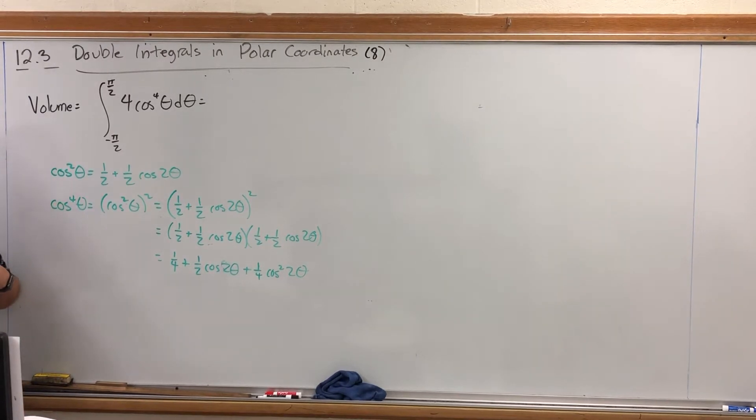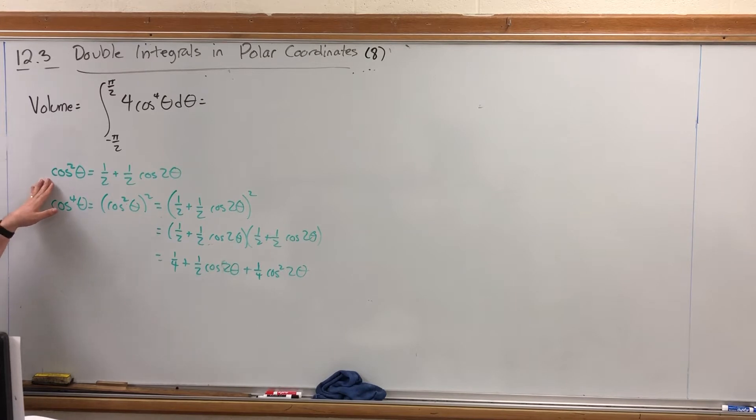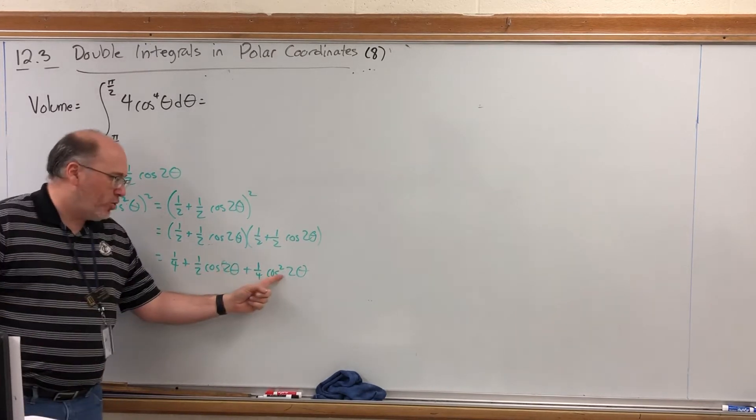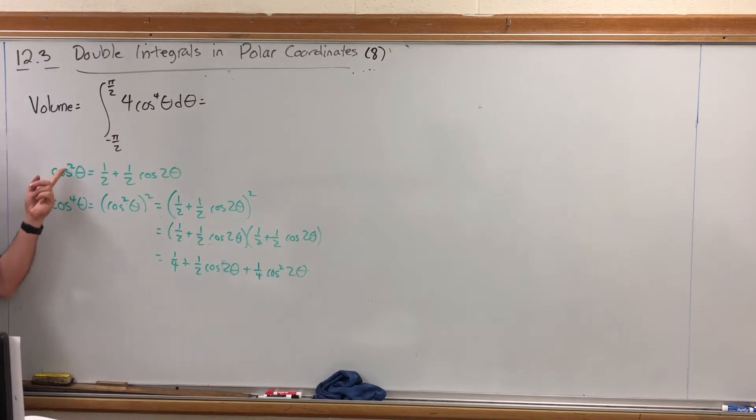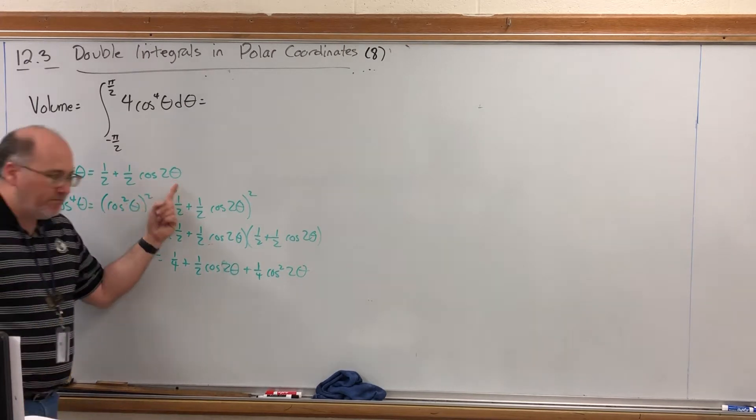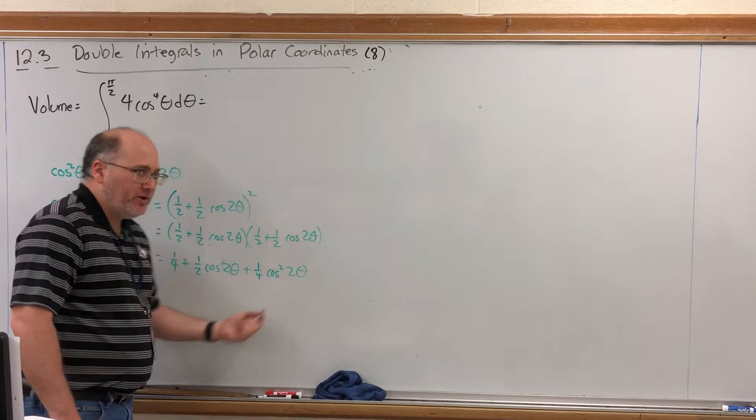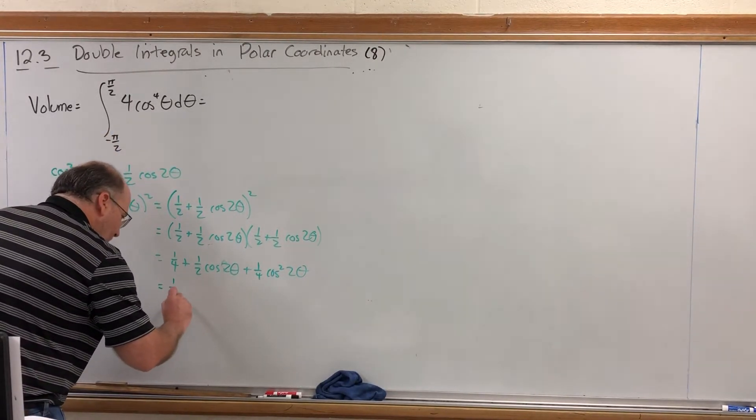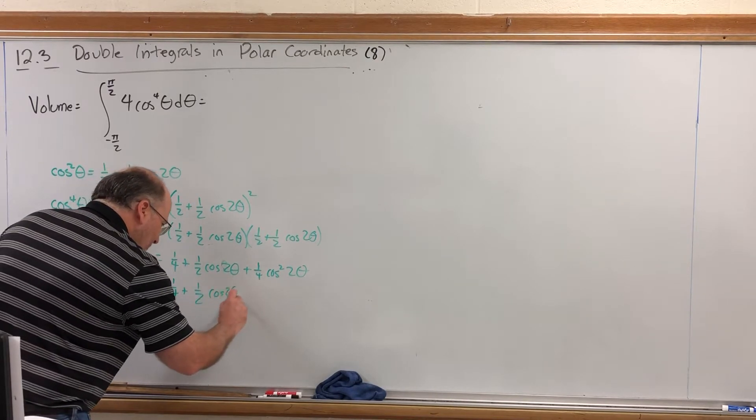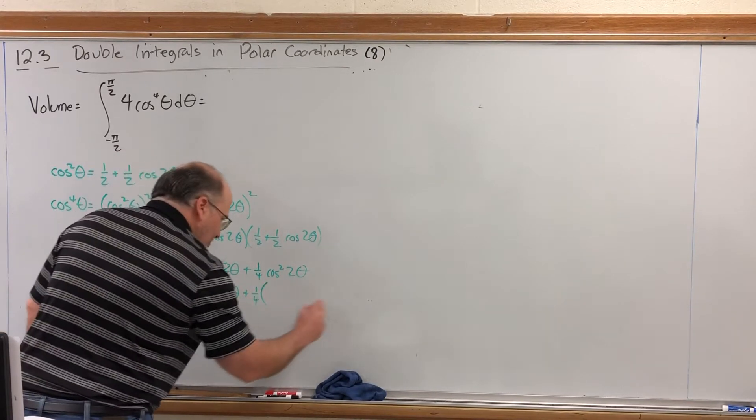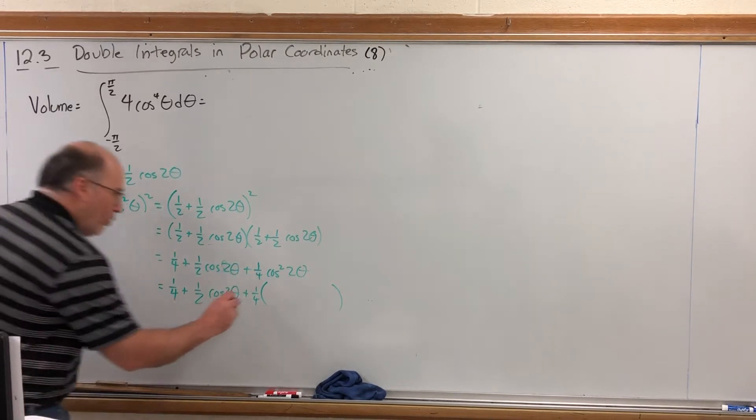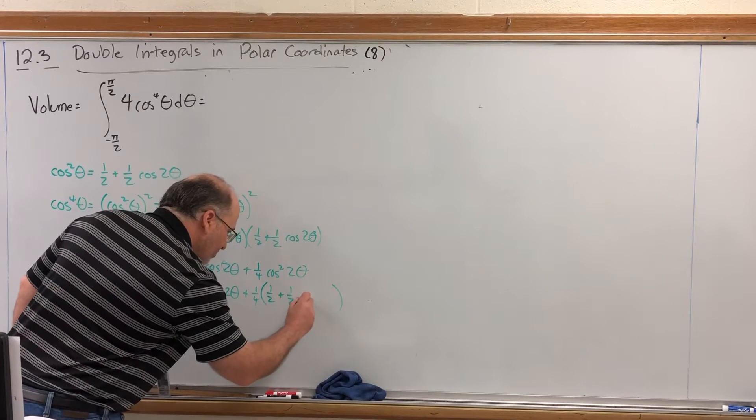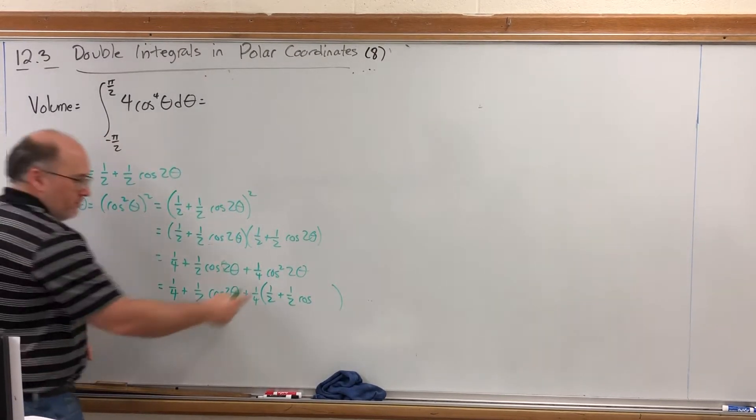So hooray we get another cosine squared so guess what, time to use the cosine power reducing formula again. Now be careful, this squared cosine's argument is two theta but the power reducing formula cuts the power in half and doubles the argument. Since this argument is already two theta when we double it it will become four theta. So one-fourth plus one half cosine of two theta plus one-fourth. Let's open up some parentheses if we apply the cosine power reducing formula to cosine squared of two theta we'll get one half plus one half cosine double the argument and get four theta there.